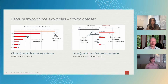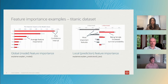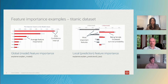On the right, we're seeing local or prediction-level feature importance. This is saying that this is a third-class passenger who is female. The fact that the model knew the passenger was third-class decreased their probability of survival by about 30%, and knowing they were female increased it by about 22%. Overall, the model gave them about 50-50 odds of survival.